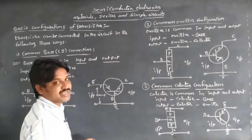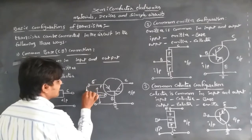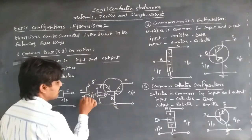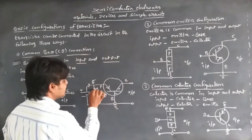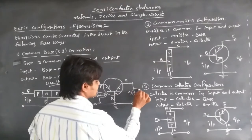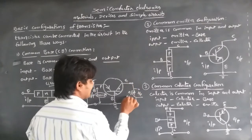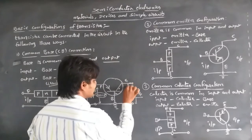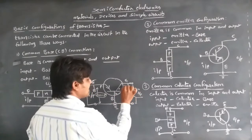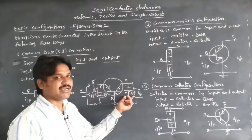The emitter-base junction is connected with a small forward bias, as we discussed in earlier videos on PNP and NPN transistor working. Forward bias means connecting the positive terminal of the battery to the P-type and the negative terminal to the base. A load resistance is also connected in the circuit, and the output is taken at the base-collector junction, which is reverse biased — P terminal to negative and N terminal to positive.